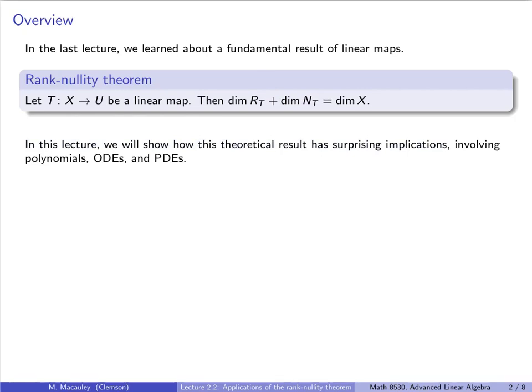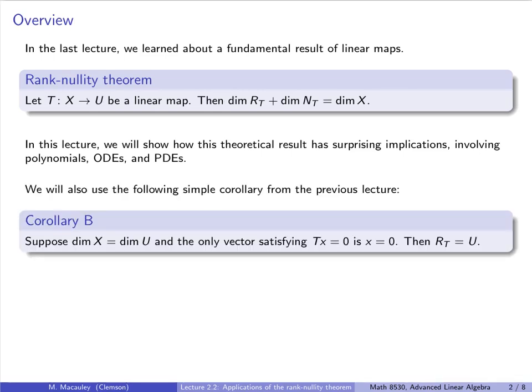In this lecture, we will show how this very theoretical result about vector spaces has some surprising implications involving roots of polynomials, differential equations, and partial differential equations. We will also use the following simple corollary from the previous lecture, that I will continue to refer to as Corollary B. This says: suppose that X and U have the same finite dimension, and additionally the null space is just the zero vector. Then the range of T is all of U, or equivalently, T is bijective.